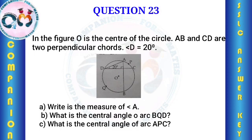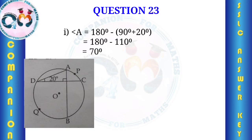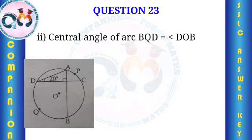Since AB and CD are perpendicular chords, their intersection forms a 90-degree angle. Angle A in triangle formed at the intersection: angle A equals 180 minus (90 plus 20) equals 70 degrees. The second step is finding the central angle of arc BQD.